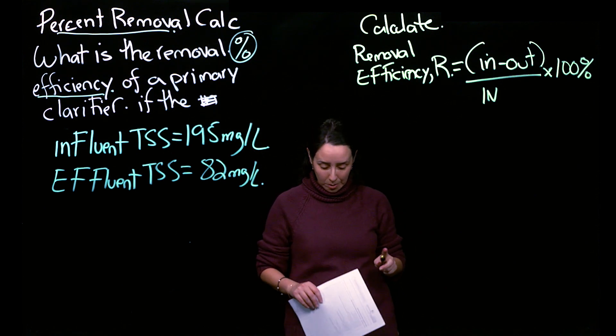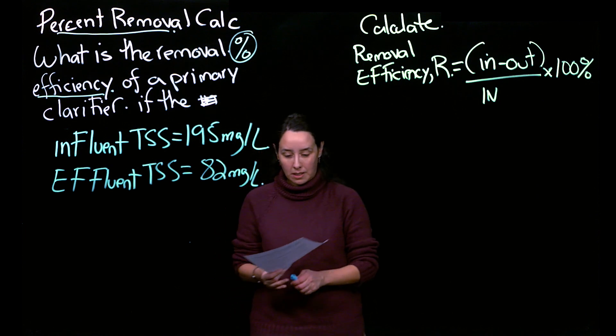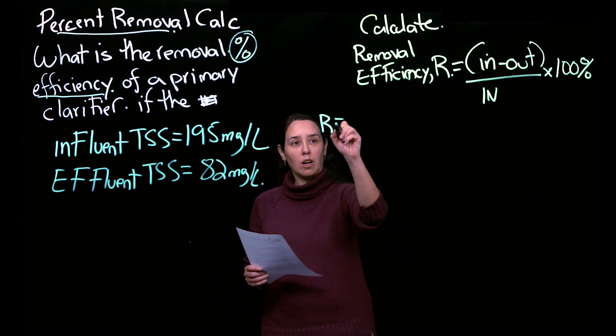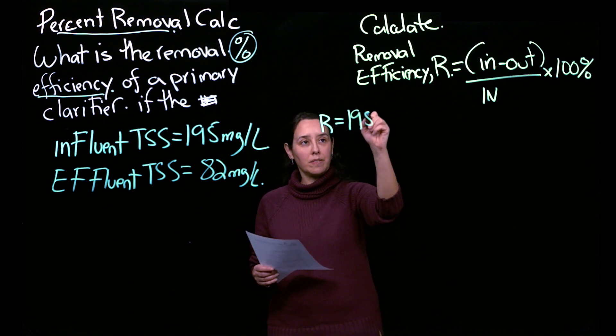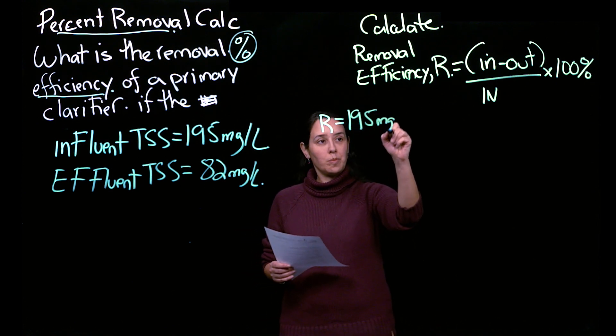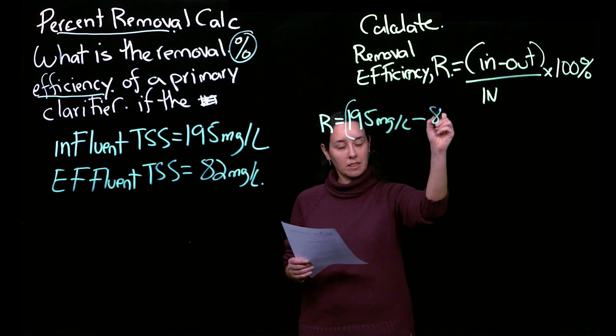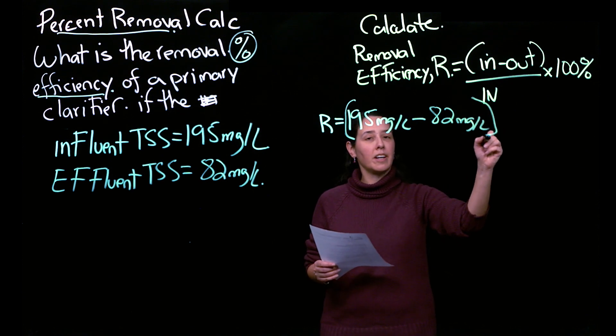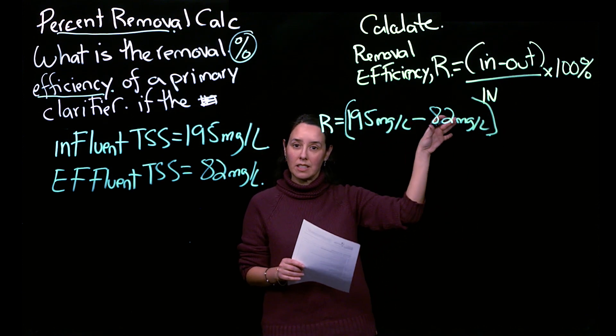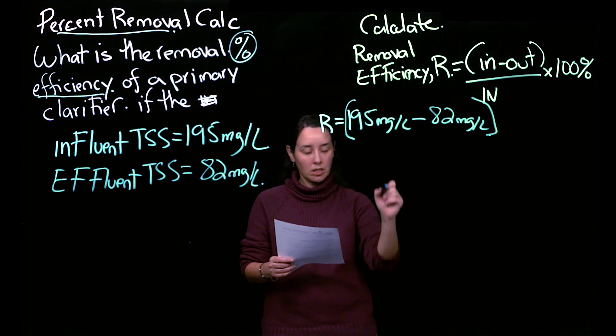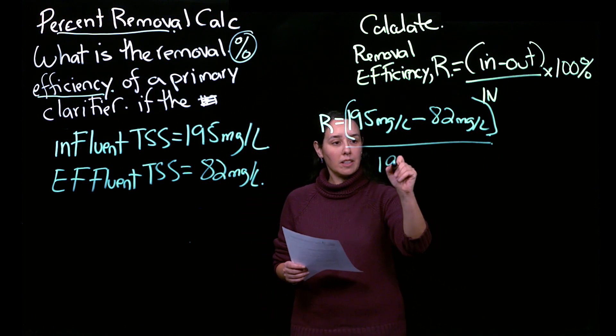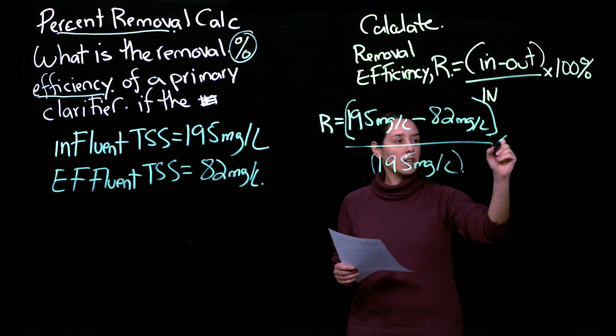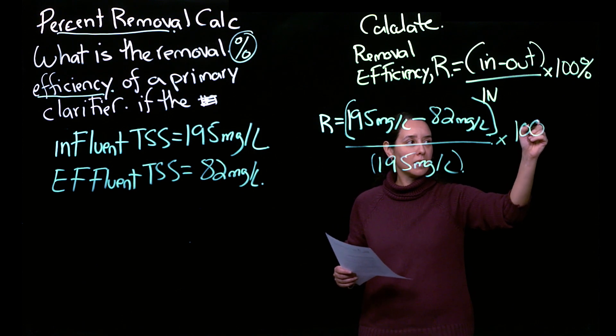So now we can just plug and play, as I like to call it, our numbers. R is 195 milligrams per liter minus 82 milligrams per liter, right, because influent is in and effluent means out, divided by 195 milligrams per liter times 100 percent.